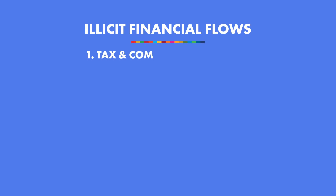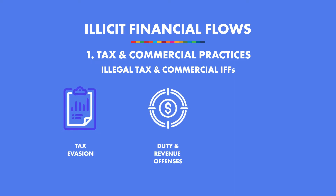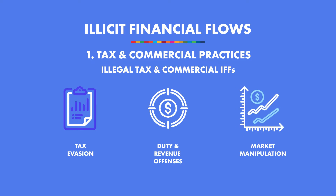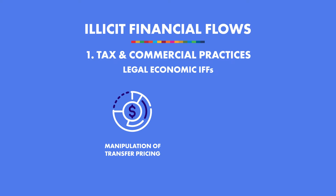Sometimes it's not so clear cut — it could be a combination of corruption and tax and commercial IFFs, which in turn can lead to theft type or terrorist activities or even black market activities. The tax and commercial practices category comprises illegal tax and commercial IFFs such as tax evasion, duty and revenue offences, and market manipulation, but also IFFs generated from legal economic activities through aggressive tax avoidance, such as the manipulation of transfer pricing or tax treaty shopping.